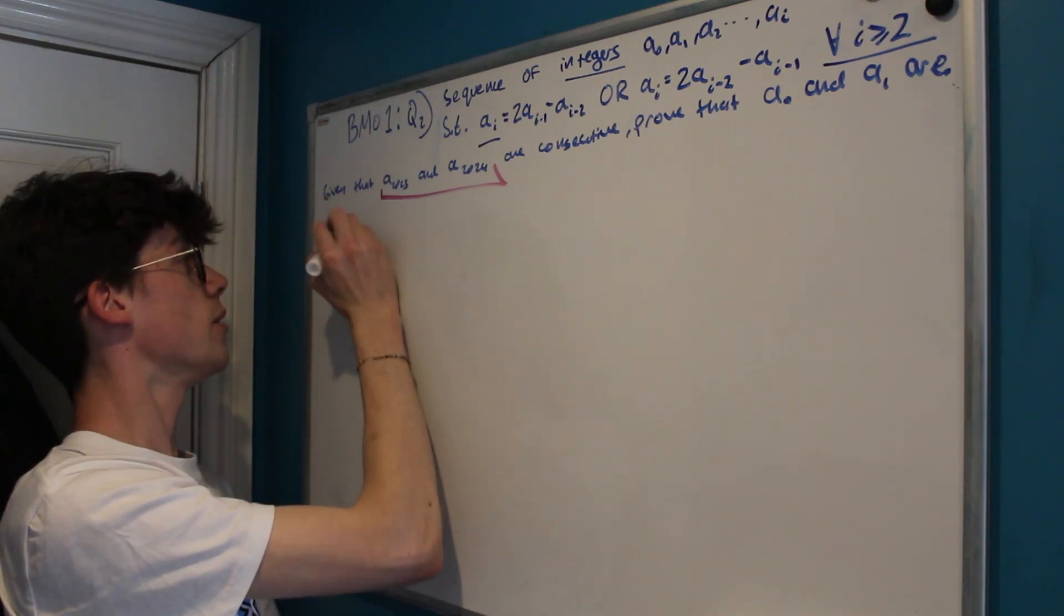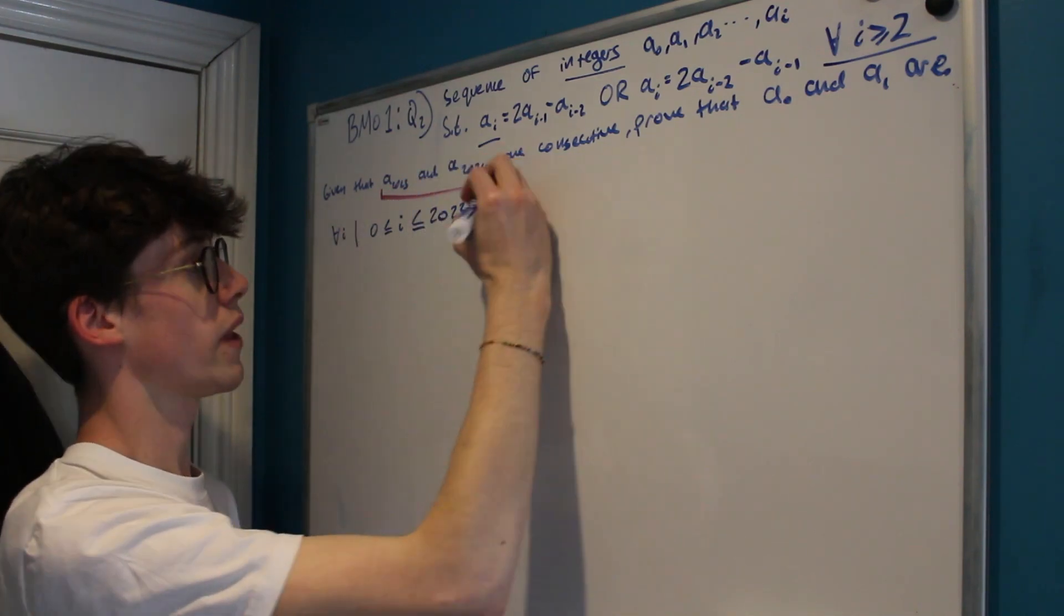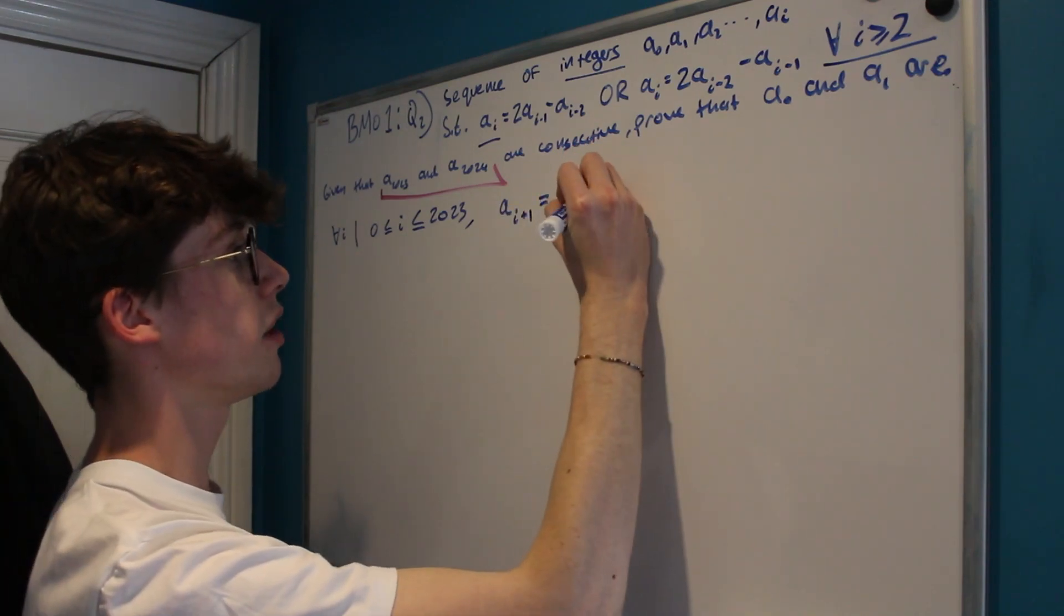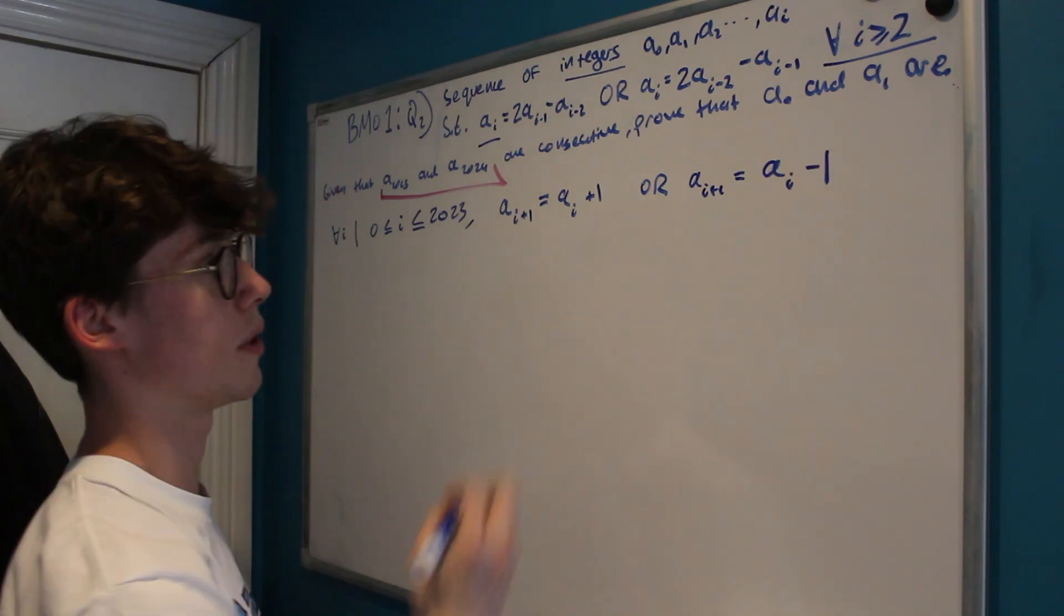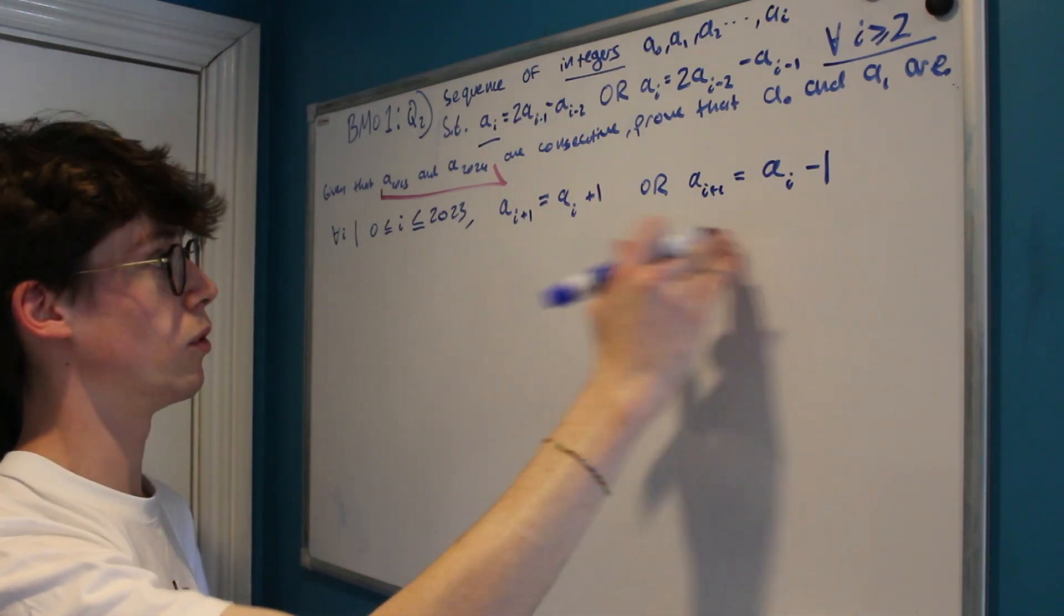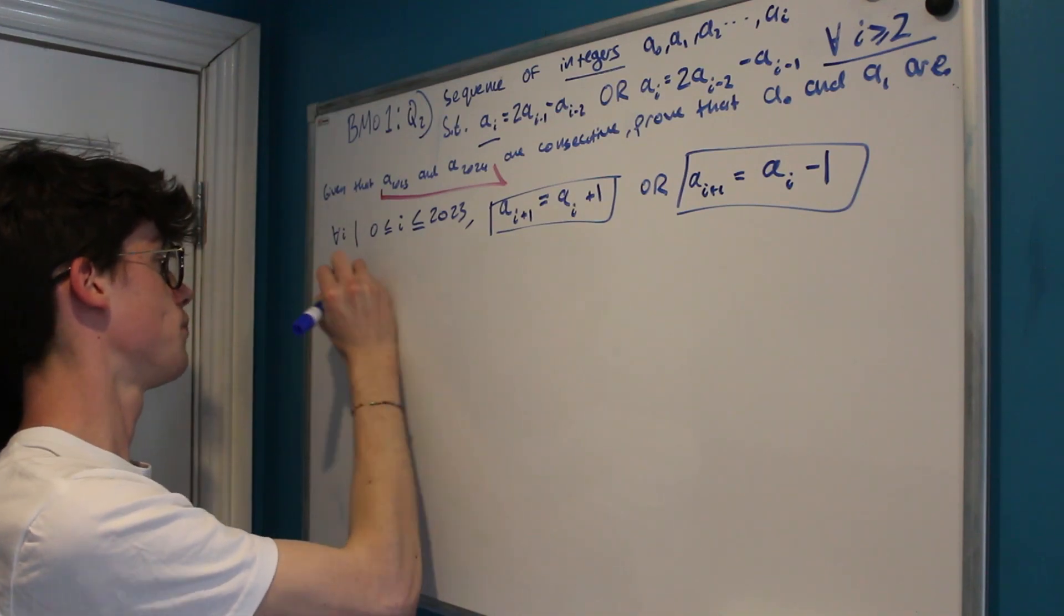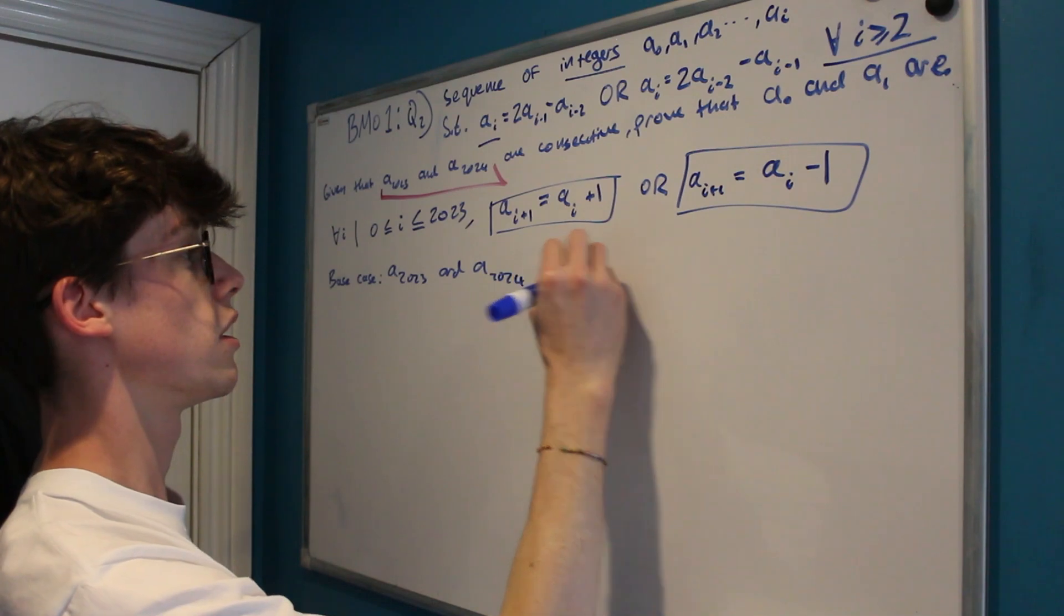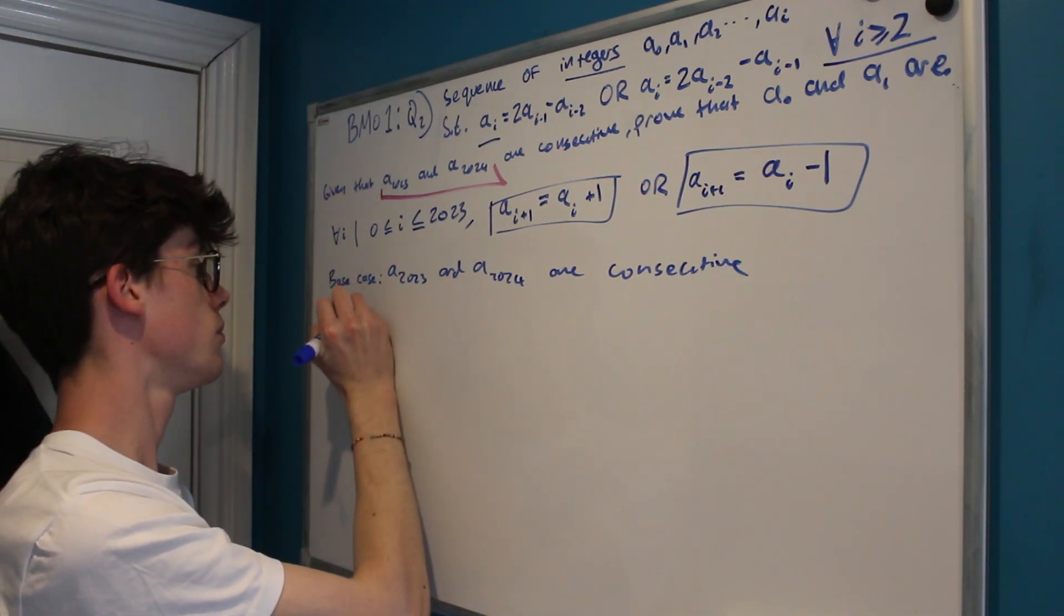We need to come up with what we actually want to prove. Well why don't we try and prove that for all i such that i is in between 0 and 2023, that ai plus 1 is equal to ai plus 1 or that ai plus 1 is equal to ai minus 1. Now the reason we have to have this or here is because numbers being consecutive can go two ways, it could either be one bigger or one smaller, and so we'll have to treat these as two separate cases in our proof. But either way we've got a base case that a2023 and a2024 are consecutive.